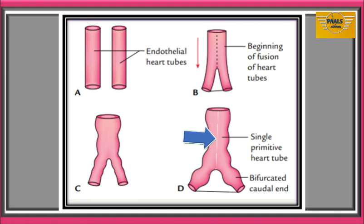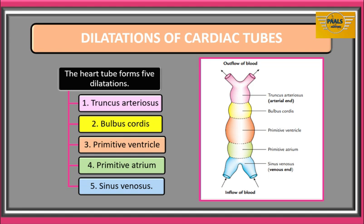Normally, the caudal ends of the two heart tubes will not fuse with each other, resulting in the inferior end of the heart being bifurcated. The single heart tube will develop many constrictions and form five dilatations.